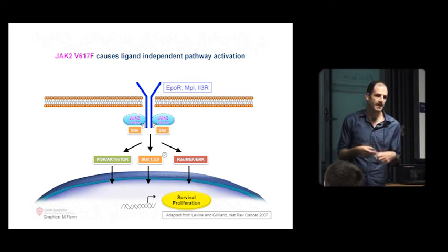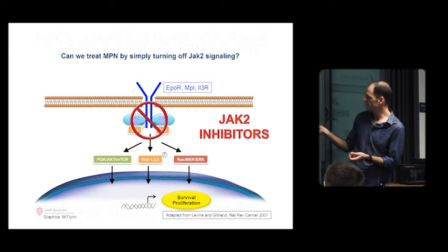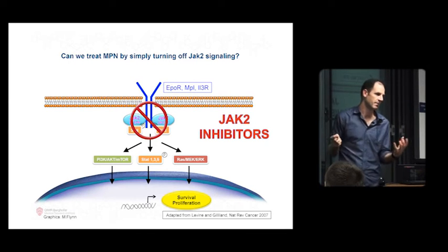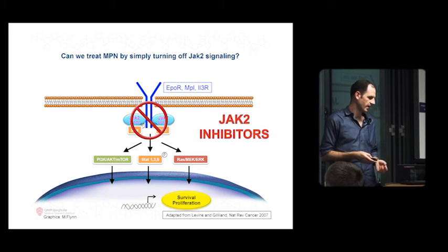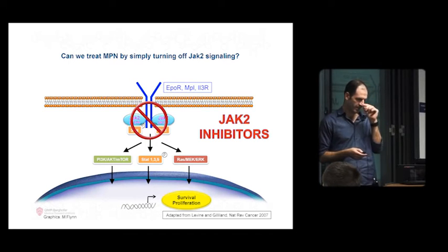Obviously, once they found this, they wanted to know: can we just turn off this JAK signaling and will everything get better? That's exactly the same paradigm as in chronic myeloid leukemia. That's where the JAK2 inhibitors come in.